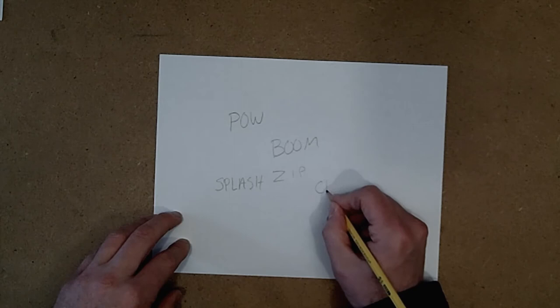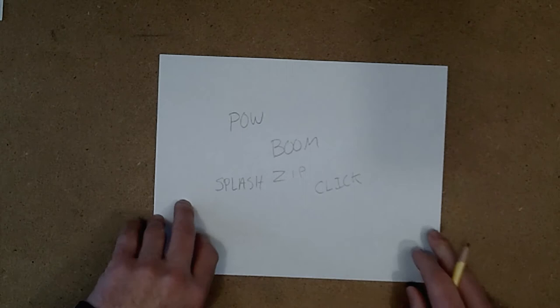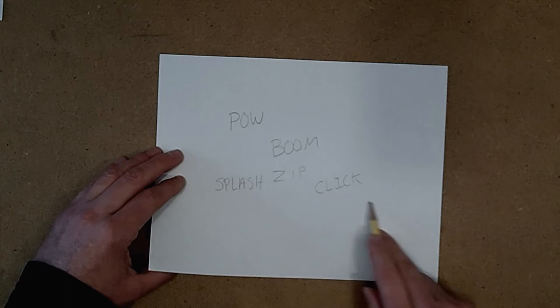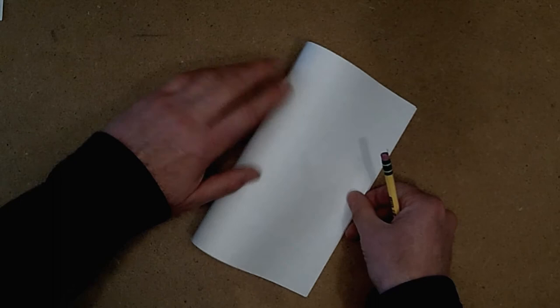Click. They don't all have to be loud, like when you're clicking a mouse. So, first thing, draw up a list of onomatopoeias, then take the paper and fold it in half. You only need a half a piece of paper for this.